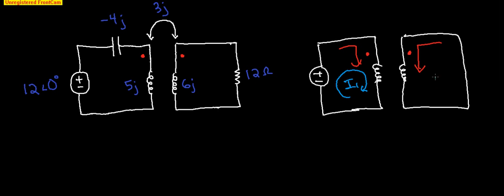However, if we define the mesh current going in the other direction, this is the same direction that the dot notation assumes. So because they are in the same direction, that means I2 will be a positive number. So choosing the direction of your mesh currents is very important in these problems.